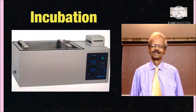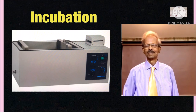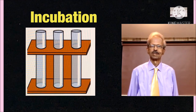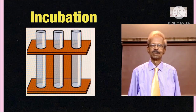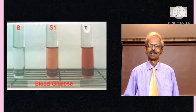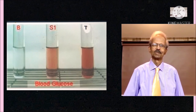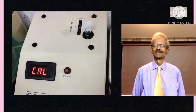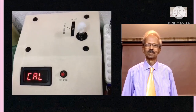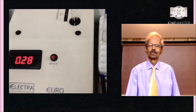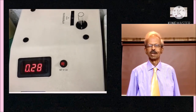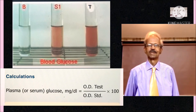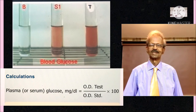Next, all tubes are placed at 37°C in a water bath for 15 minutes, or if a water bath is not available, the tubes can be kept at room temperature for 30 minutes. Immediately after, readings are taken of the developed pink color. Readings are measured using a photometer or semi-auto-analyser at 530 nm wavelength or using a green filter. Plasma glucose in mg% is calculated using this formula: optical density of test divided by optical density of standard, multiplied by 100.